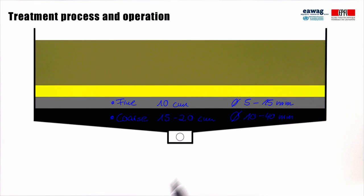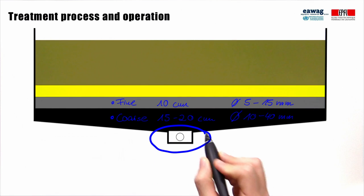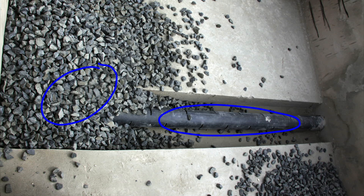Based on the bottom layer, there is a perforated pipe for the collection of the effluent. This picture shows the perforated pipe and the coarse gravel layer during filling in at our pilot scale research facility in Dar es Salaam.